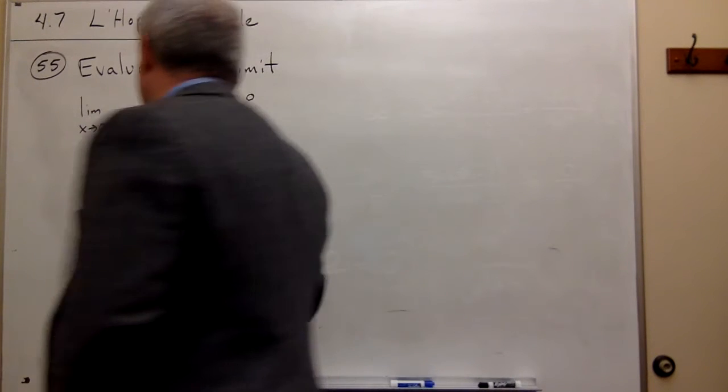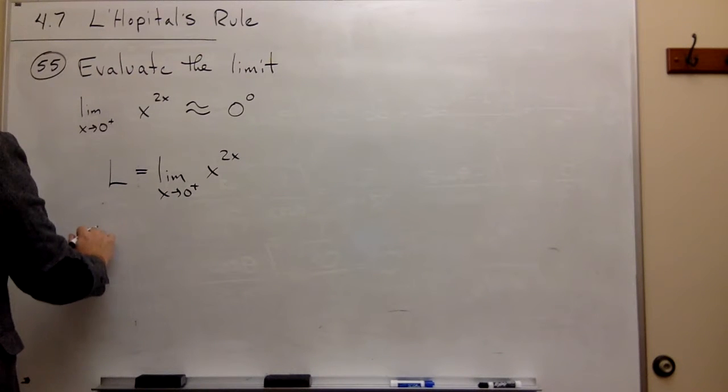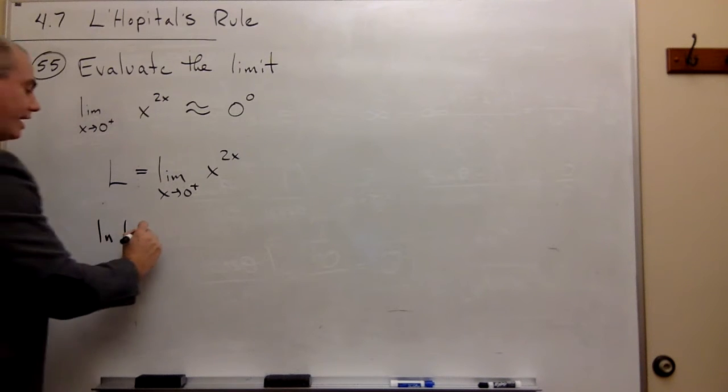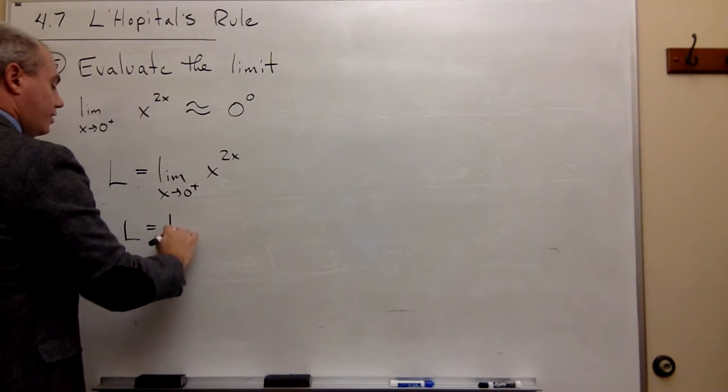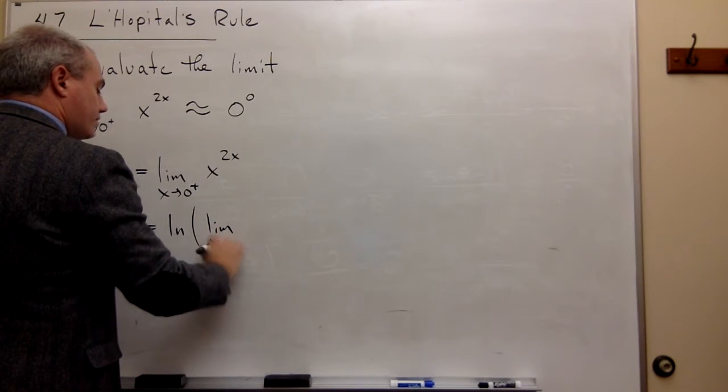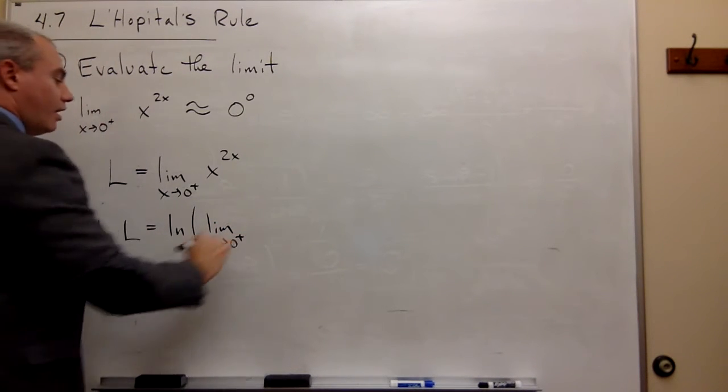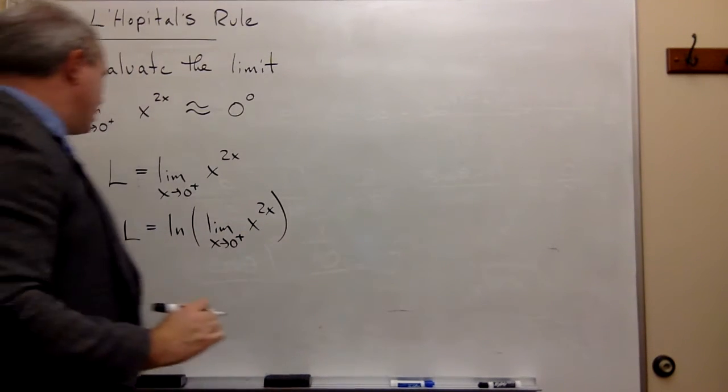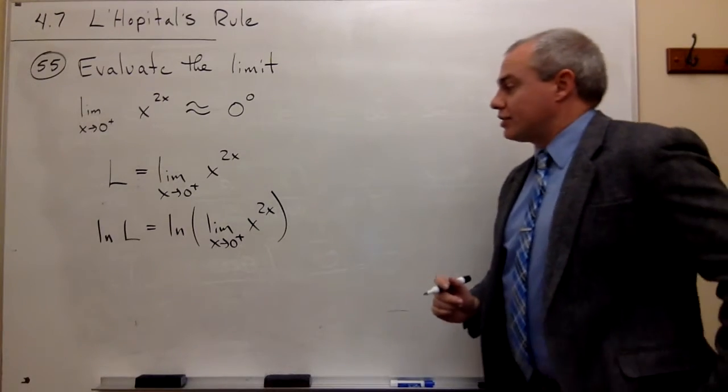So I'm going to take the natural log of one side of the equation and get ln of L, and I'll take the natural log of the other side of the equation and I'll get the natural log of the limit as x goes to zero from the right of x to the 2x. So I just took the natural log of both sides of the equation.